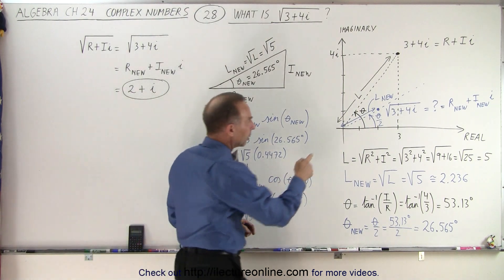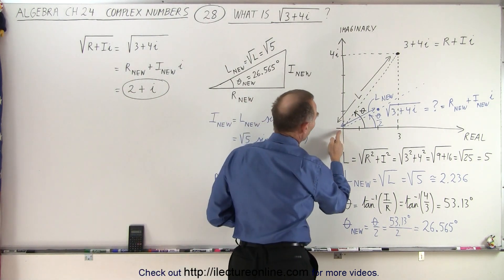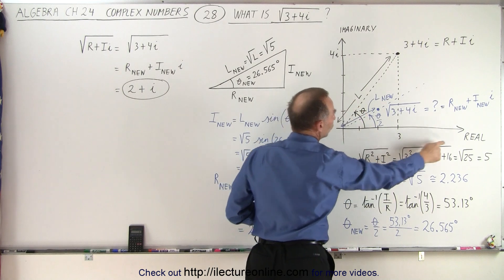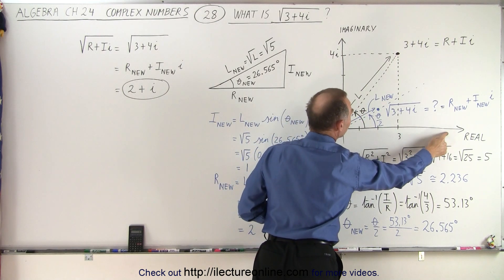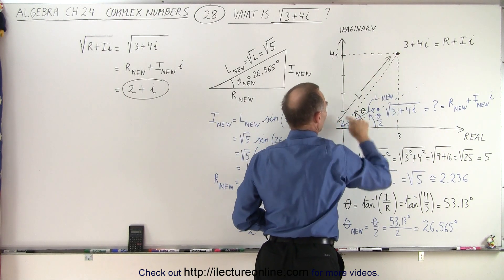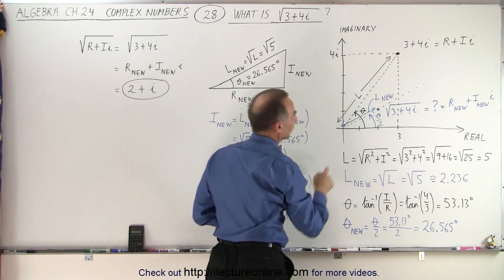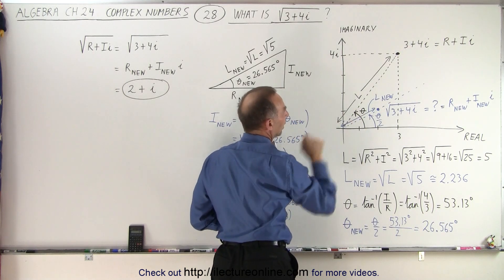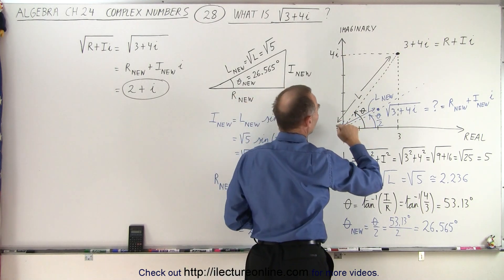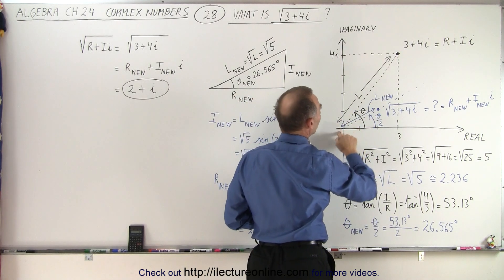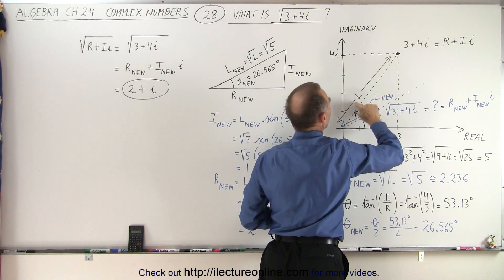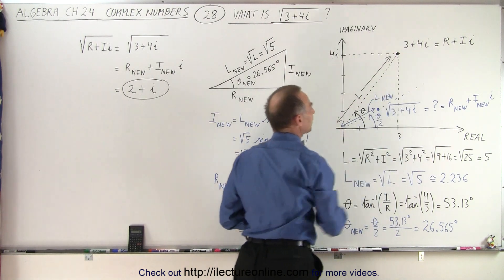Then, if we draw a line from the origin to that point, we have an angle between the real axis and the line connecting that complex point to the origin. We call that angle theta. The length, or the distance from the origin to that point, let's call it L — that is simply the length of this line.